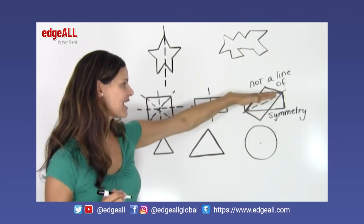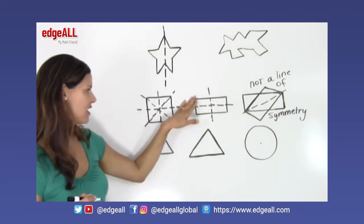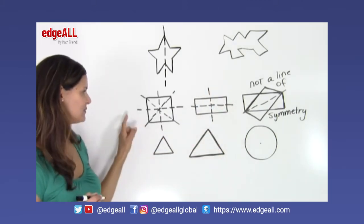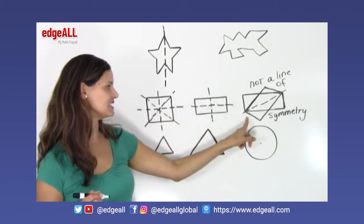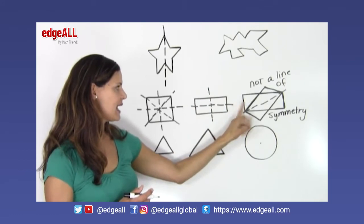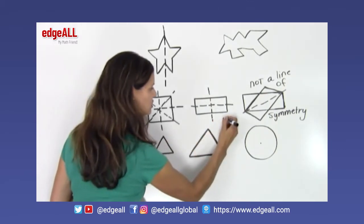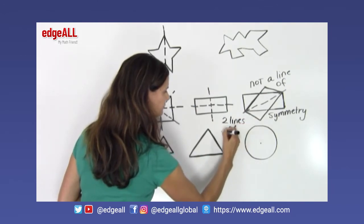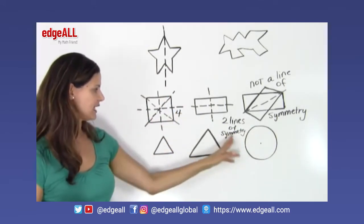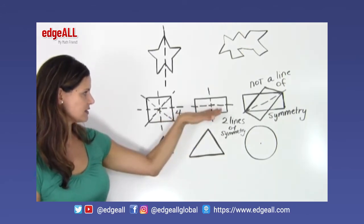When I reflect the rectangle across the diagonal, it does not match up on the other side like it does with the horizontal or vertical lines through the middle. We already saw with the square that the diagonal does line up, but with a rectangle it does not. So a rectangle has only two lines of symmetry — vertical and horizontal, but not diagonal — whereas a square has four.